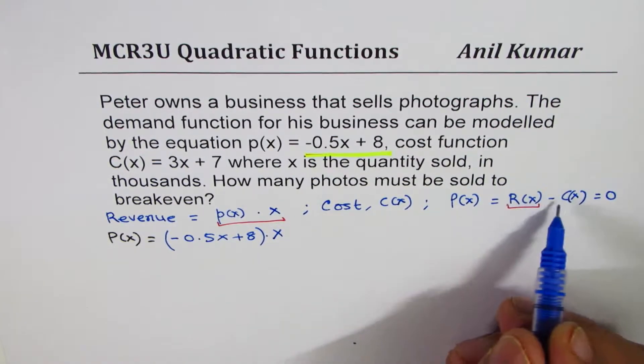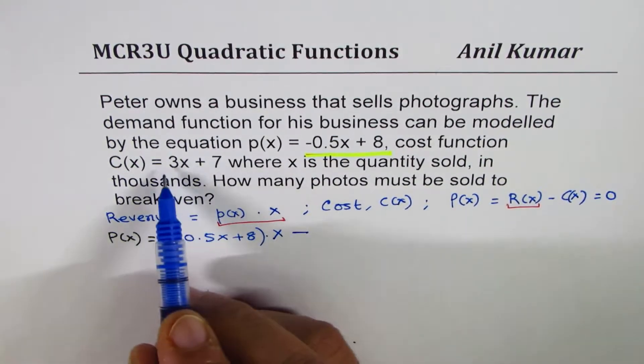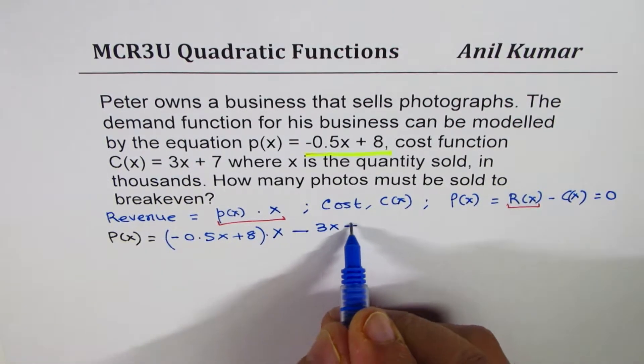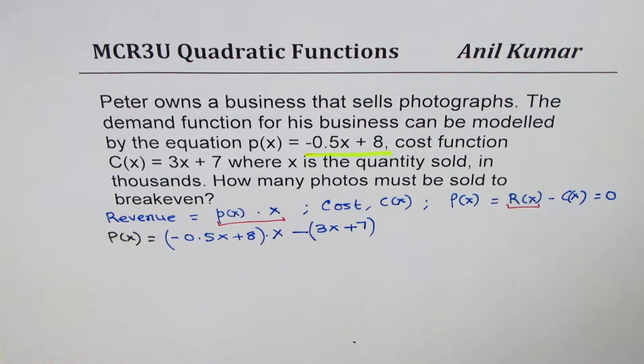Now that is the revenue part minus the cost function, which is 3x plus 7. The linear function given to you is the cost function. Put that in bracket. So I hope this equation is very clear to you.